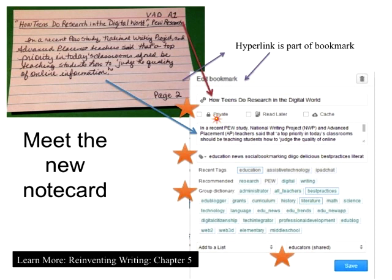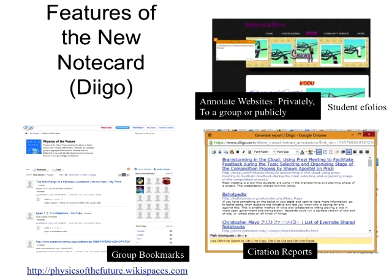In Diigo you've got some new things: you can make it private, say you want to read it later, or cache it. Caching is great for when you're grading websites for kids because it keeps a copy of the website at that moment. Teach students how to summarize — one thing students do a lot when they make a digital note card is they do not paraphrase. I always tell my students: if you paraphrase, you won't plagiarize. You've got hashtags, recent tags, and a group dictionary — a tag dictionary from the massive educators group who share on Diigo.